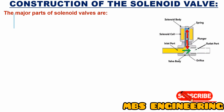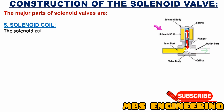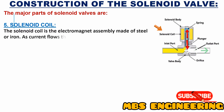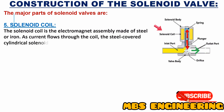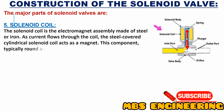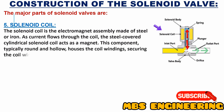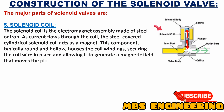The fifth part of the solenoid valve is the solenoid coil. The solenoid coil is the electromagnet assembly made of steel or iron. As current flows through the coil, the steel-covered cylindrical solenoid coil acts as a magnet. This component, typically round and hollow, houses the coil windings, securing the coil wire in place and allowing it to generate a magnetic field that moves the plunger.